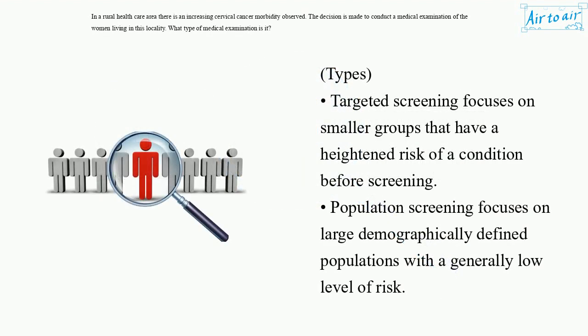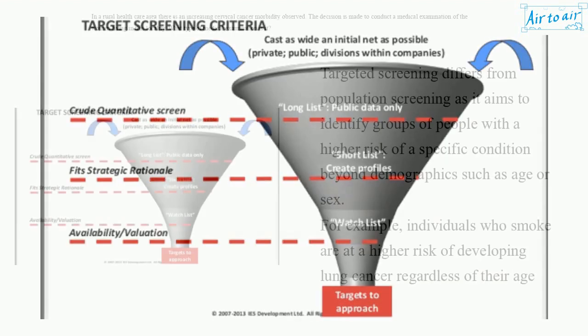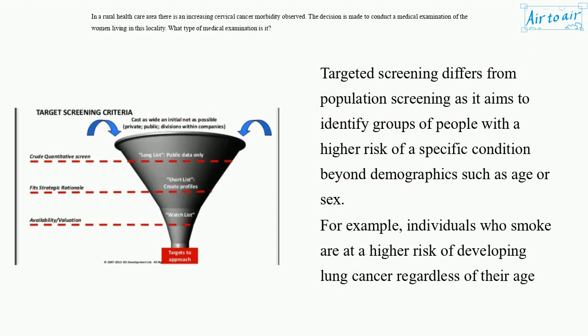Types. Targeted screening focuses on smaller groups that have a heightened risk of a condition. Population screening focuses on large demographically defined populations with a generally low level of risk. Targeted screening differs from population screening as it aims to identify groups of people with a higher risk of a specific condition beyond demographics such as age or sex.